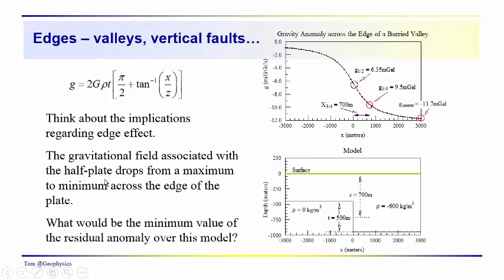So that tells you that there's an edge effect. As we get closer to the edge, as we go beyond the edge, the value gradually rises up to some maximum. In this case, since we have a negative density contrast, that maximum is going to be zero. The minimum is going to be, well, this is G one half, so it would be 2 times 6.35 mG, or minus 12.7 mG, way out here somewhere.